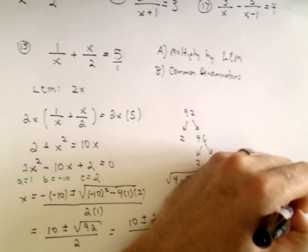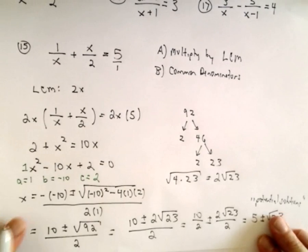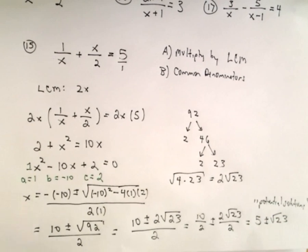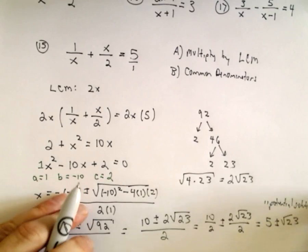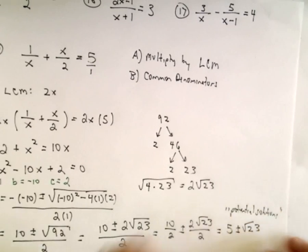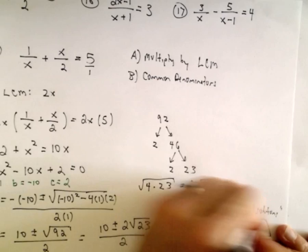So these are potential solutions. I say potential, that's my own terminology here. Just like logarithms, it's possible to get extraneous solutions. Certainly it's possible that neither one of these solutions work, maybe only one of them works, maybe they both work.